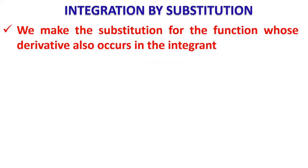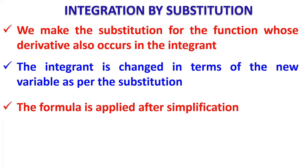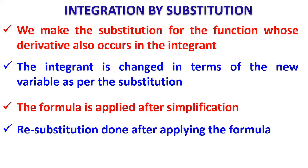To summarize the steps: Step 1 — make the substitution for the function whose derivative also occurs in the integrand. Step 2 — change the integrand in terms of the new variable as per the substitution. Step 3 — apply the appropriate formula for simplification, and then do the resubstitution after applying the formula. This is very, very important — don't forget to do the resubstitution after applying the formula.